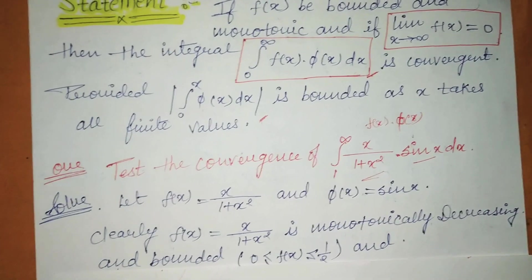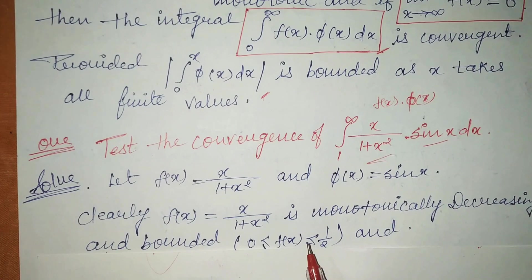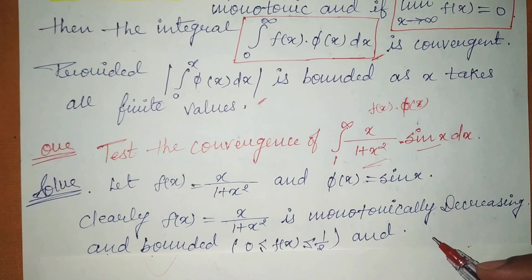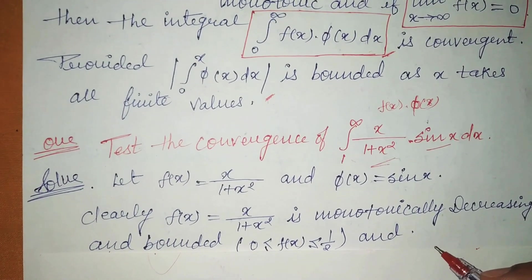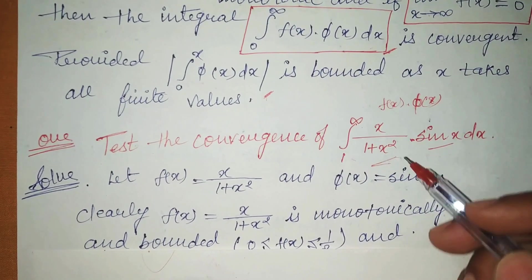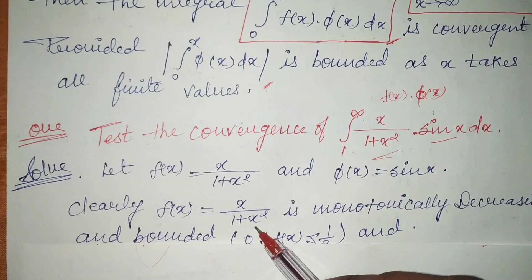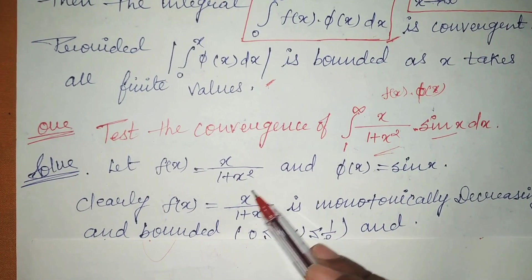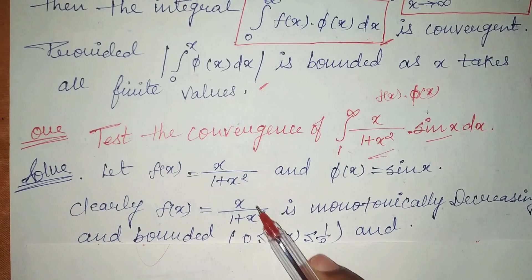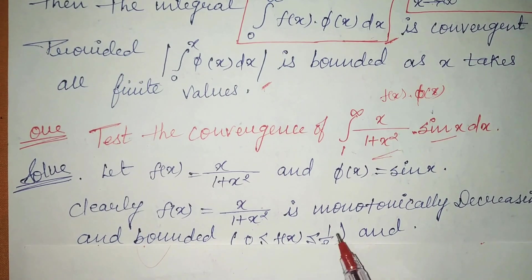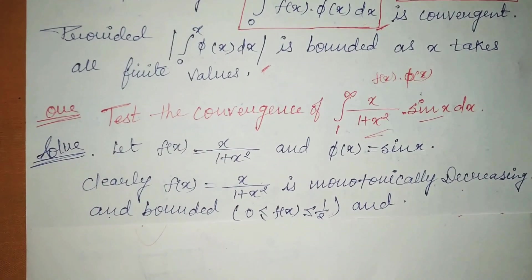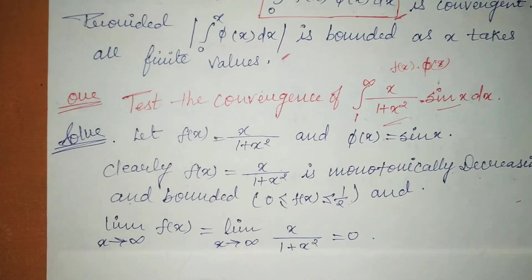Clearly, fx = x/(1+x²) is monotonically decreasing and bounded. The limit of the question is from 1 to infinity. Put x = 1: you get 1/(1+1) = 1/2. So the maximum value is 1/2. As x increases, the values decrease, so it is bounded and monotonically decreasing. This is our first condition fulfilled.